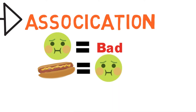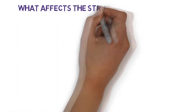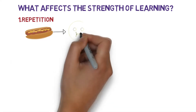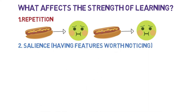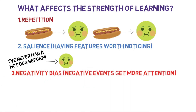Now this is a very generalized answer because several things can affect whether or not an association sticks. One is repetition — if you ate a hot dog many times and got sick for most of those times, it's more likely that you'd make the association. Another is salience, meaning how much the situation stood out. If it's your first time eating a hot dog and you get sick, it's more likely that you'd make the association. You are also more likely to make an association if the experience is negative rather than positive, due to our inherent negativity bias.